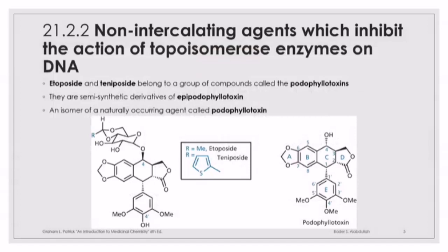Examples are etoposide and teniposide, which are natural compounds belonging to a group called the podophyllotoxins. These are not natural compounds — they are semi-synthetic derivatives. Etoposide and teniposide are semi-synthetic derivatives of epipodophyllotoxin.